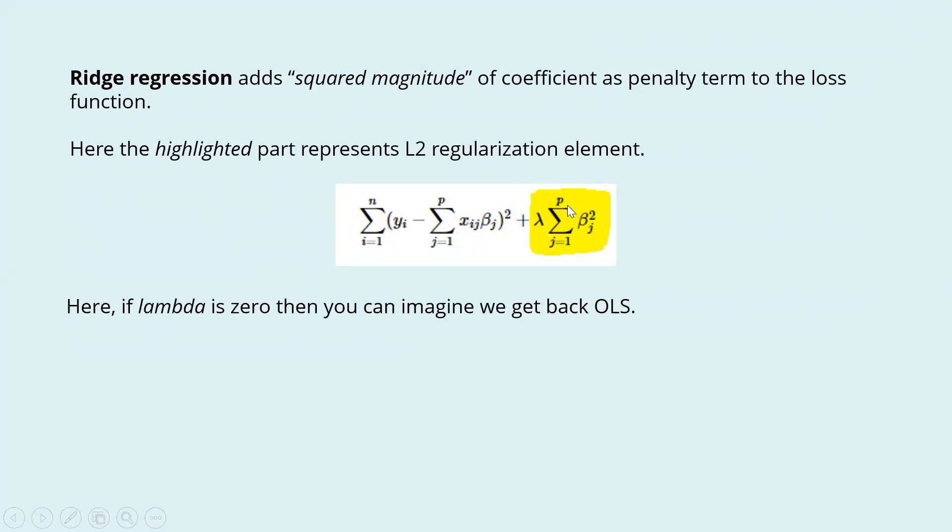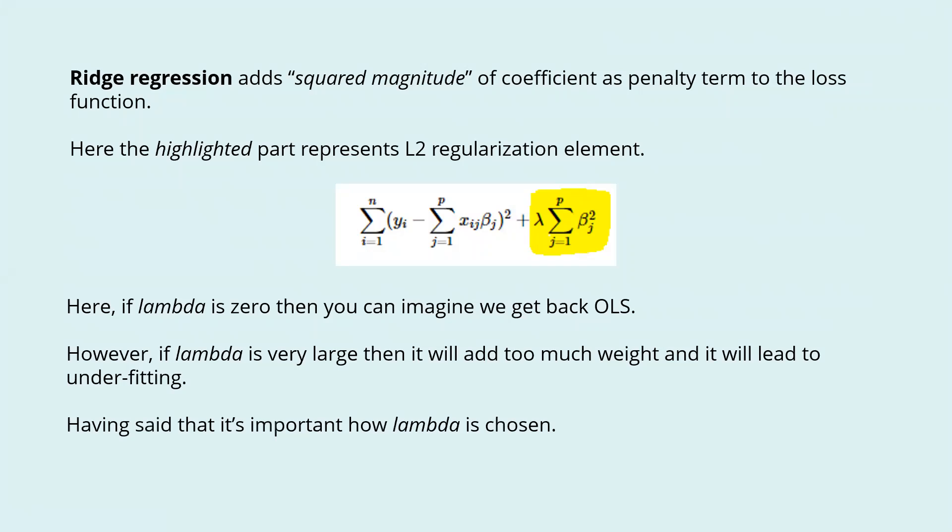If lambda is zero, we get back OLS. However, if lambda is very large, it will add too much weight and lead to underfitting. Having said that, it's important how lambda is chosen. This technique works very well to avoid overfitting issues.